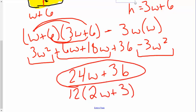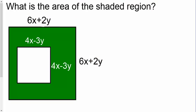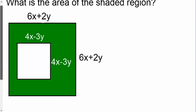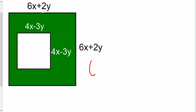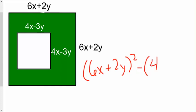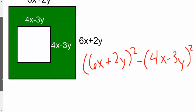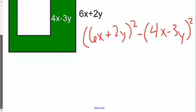But in terms of a variable expression, that is the correct answer. Alright, let's try one more before I give you some practice. What is the area of the shaded region? We're talking about the bigger square minus the smaller square. This might look intimidating because we now have two variables, but it's really not that bad. My outside square has dimensions 6w + 2, and my inside square has dimensions 4x − 3y. The area of a square is side length squared.